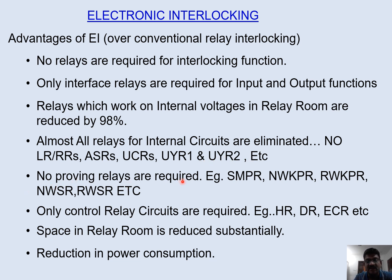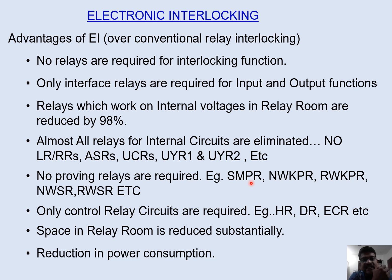No proving relays are required — SMPRs, NWKRs, RWKRs. For example, previously in parallel interlocking circuits, if SMPR is used we required about 20 to 25 contacts, meaning 4 to 5 relays were required. But now one input is enough and we can use that input any number of times — that is the advantage of EI. Only controlled relays are required, such as HR and DR, which are the controlled relays on the output side.